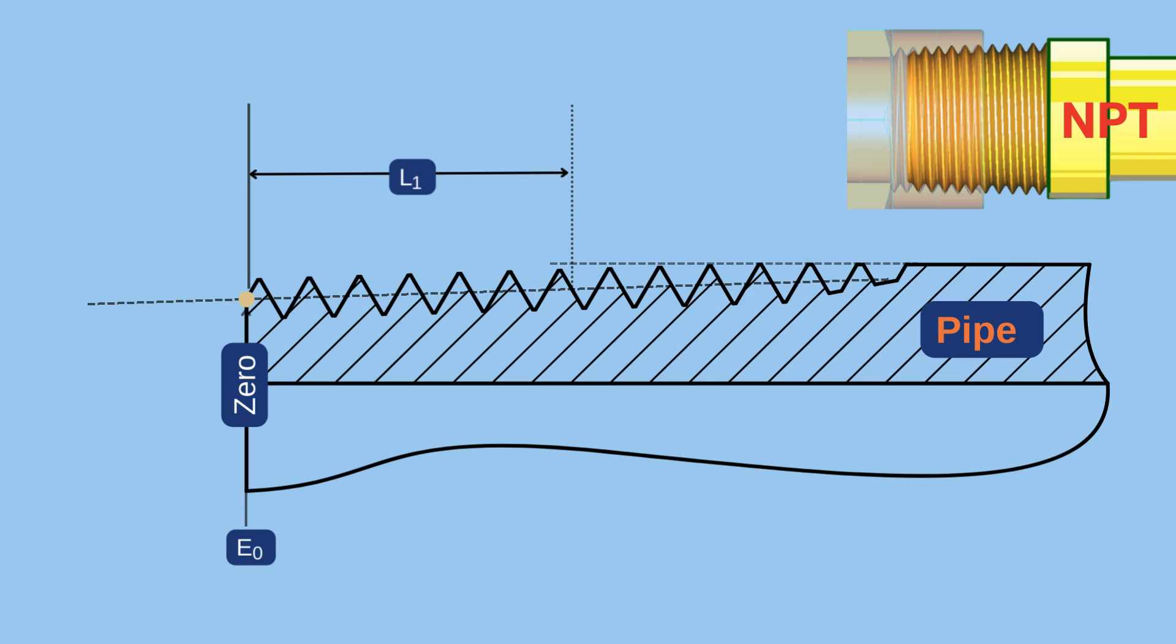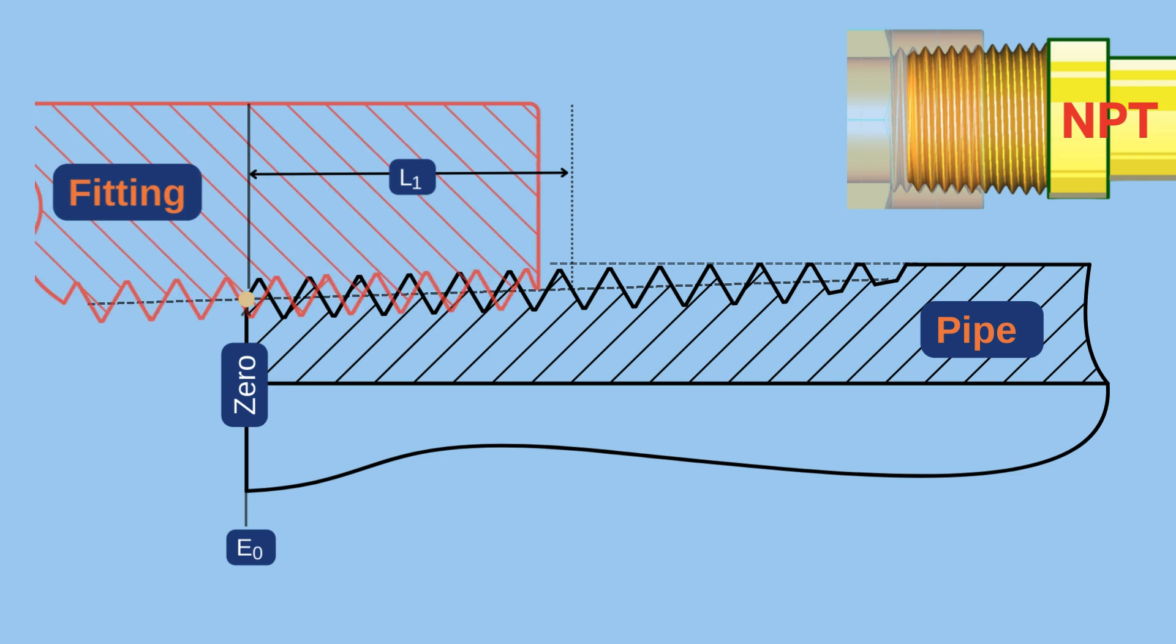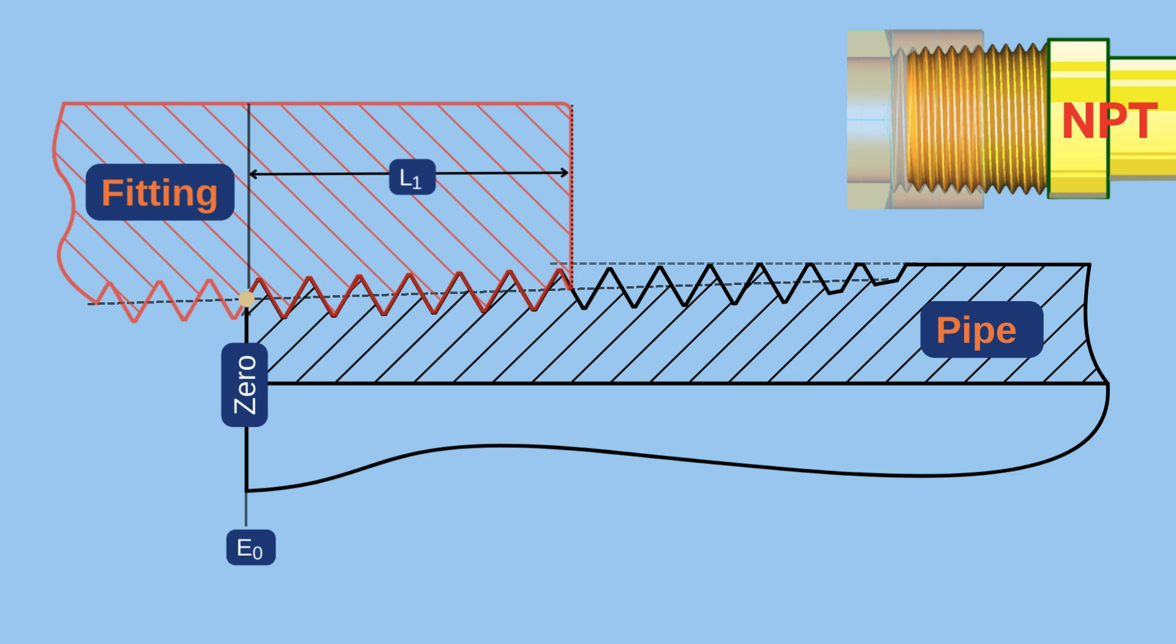L1 is called the length of hand-tight engagement. It measures the maximum distance that the male and female parts can be threaded by normal hand force, assuming both parts have a perfect thread form and taper and are precisely at the nominal size. The pitch diameter at this plane is noted as E1. In external threads, it is called the pitch diameter at the plane of hand-tight engagement length, or simply the pitch diameter at the L1 plane.